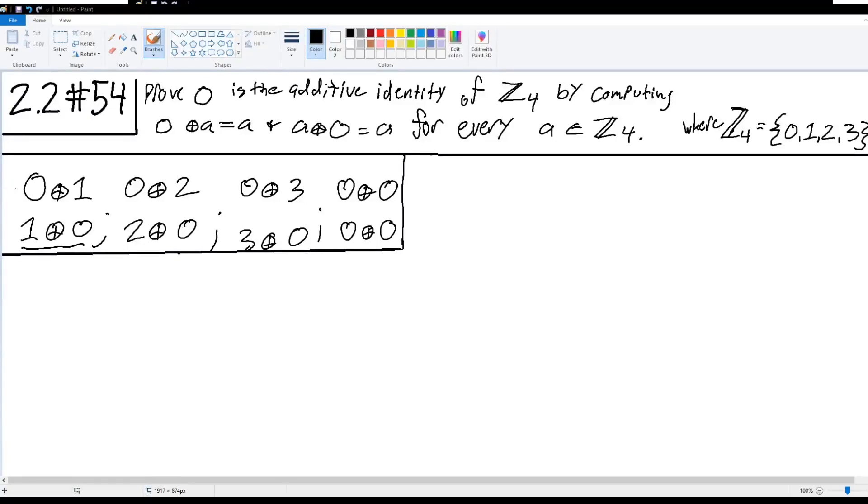All right, so for my oral homework presentation here, I'm doing section 2.2, number 54, where we're proving that 0 is the additive identity of addition mod 4 by computing 0 modular addition A equals A, and A modular addition 0 equals A for every A within the set under addition mod 4.